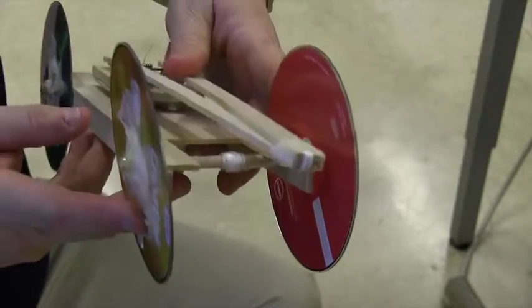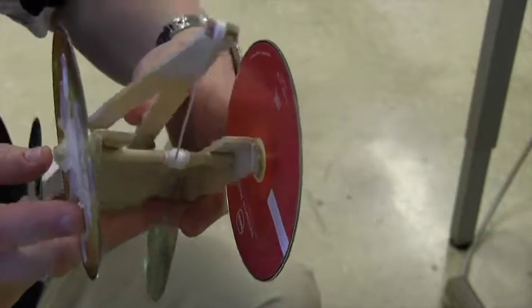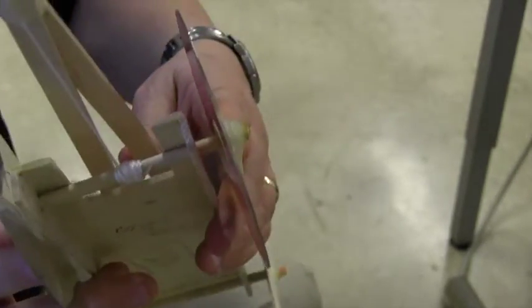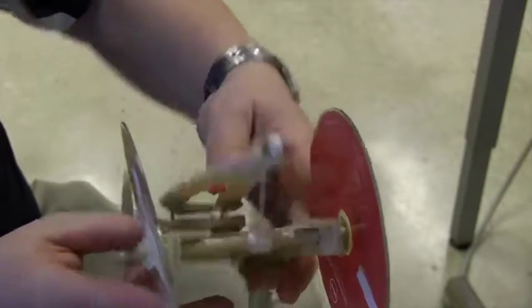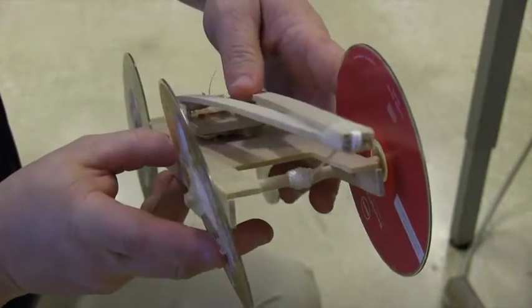So now the car is wrapped up. The string is wrapped onto the back axle. You see that? And we're ready to test the car.